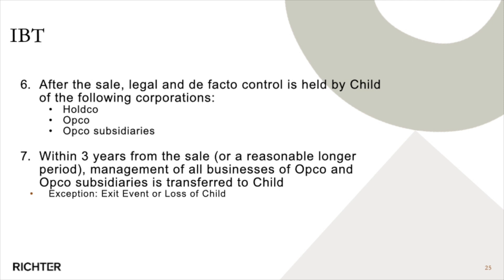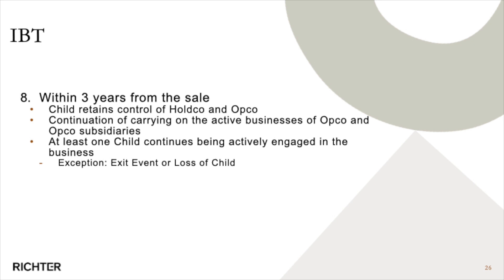Another exception applies in case of loss of a child through death or mental or physical impairment. Within three years from the sale, the child must retain control of the operating entity and purchaser company — there cannot be a shift of control. The businesses must continue being carried on, and at least one child must be involved at the end of the three-year period, even if there has been a phase-down or divestiture among multiple children.